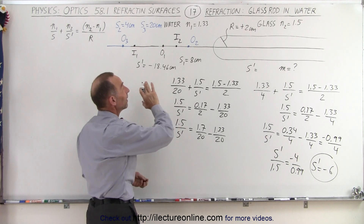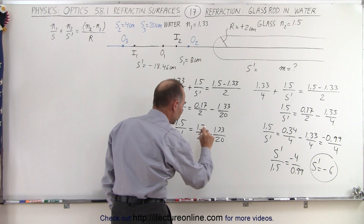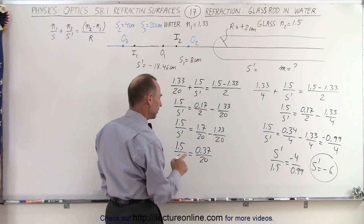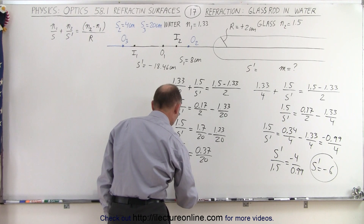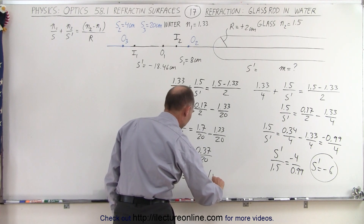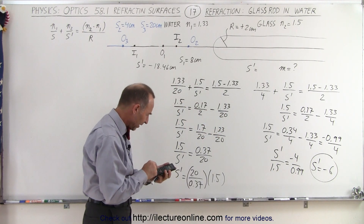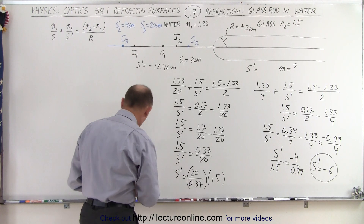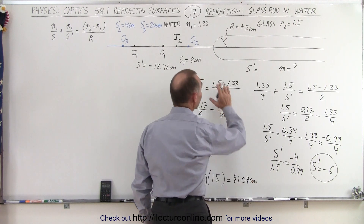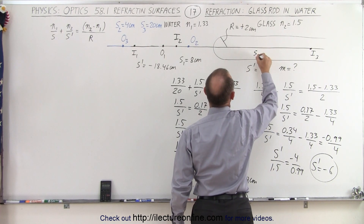A positive result for S prime means the image will be on the other side of the boundary, inside the glass rod. Finishing up: 1.5 over S prime equals 1.7 minus 1.33, which is 0.37, over 20. So S prime equals 20 over 0.37 multiplied by 1.5, which is 30 divided by 0.37. Using a calculator: 30 divided by 0.37 gives 81.08 centimeters. So the image I3 is inside the rod at a distance of 81.08 centimeters.